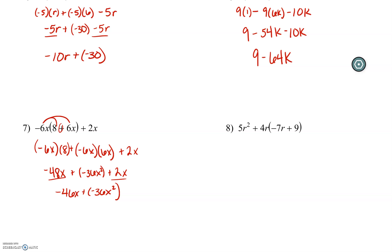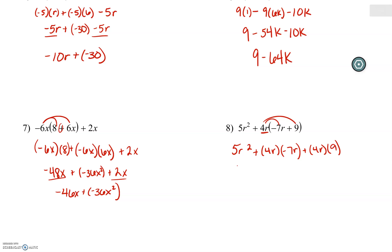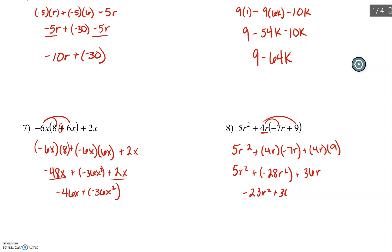Last one for this video. 4r is being multiplied with the parentheses, so we distribute it through, but 5r squared is just hanging out. 4r times negative 7r plus 4r times 9. Multiply and simplify: 5r squared plus 4r times negative 7r would be negative 28r squared, and 4r times 9 would be 36r. 5r squared and negative 28r squared are like terms, so negative 28r squared plus 5r squared would be negative 23r squared plus 36r. r squared and r are different terms, so we cannot combine those together.